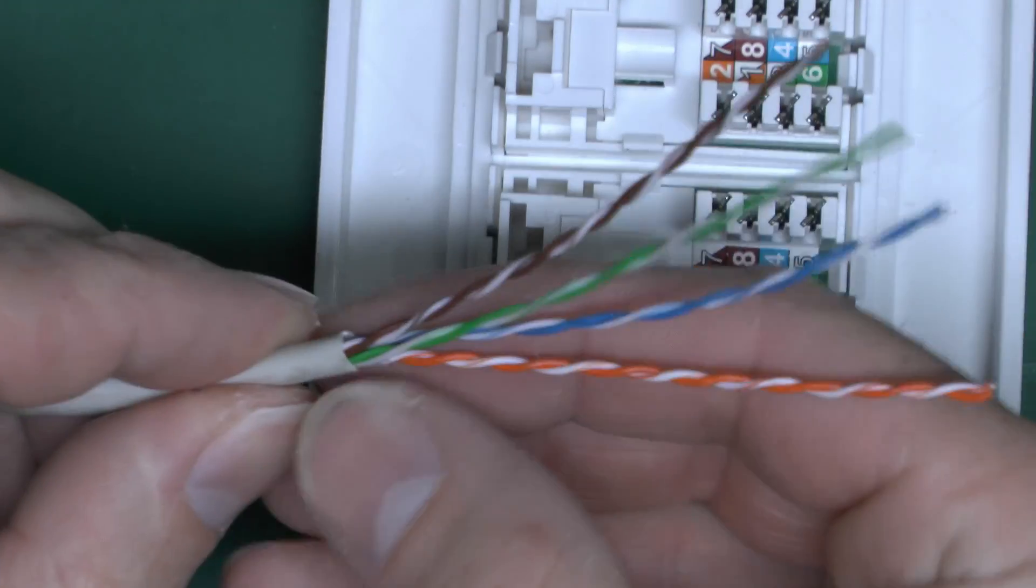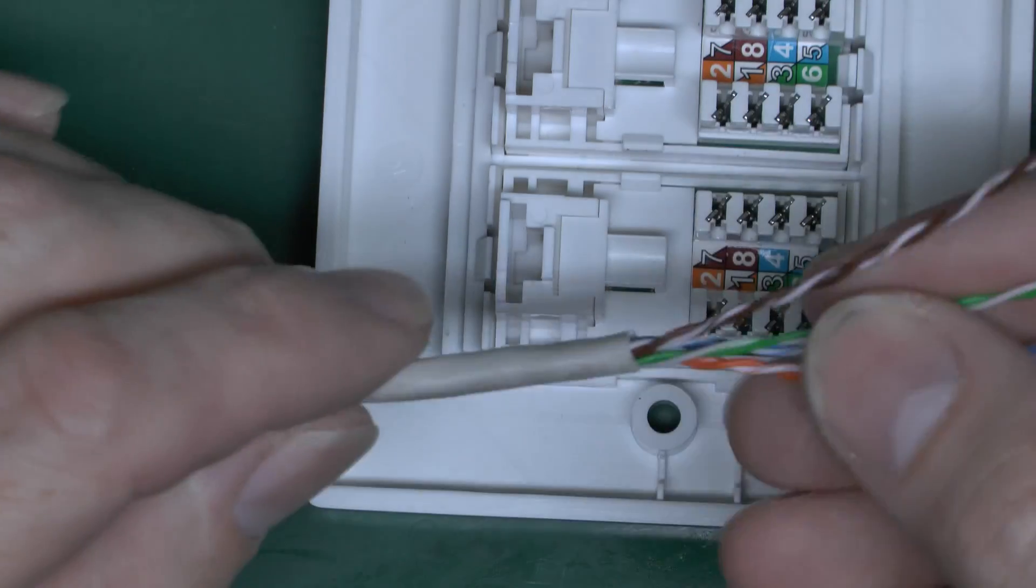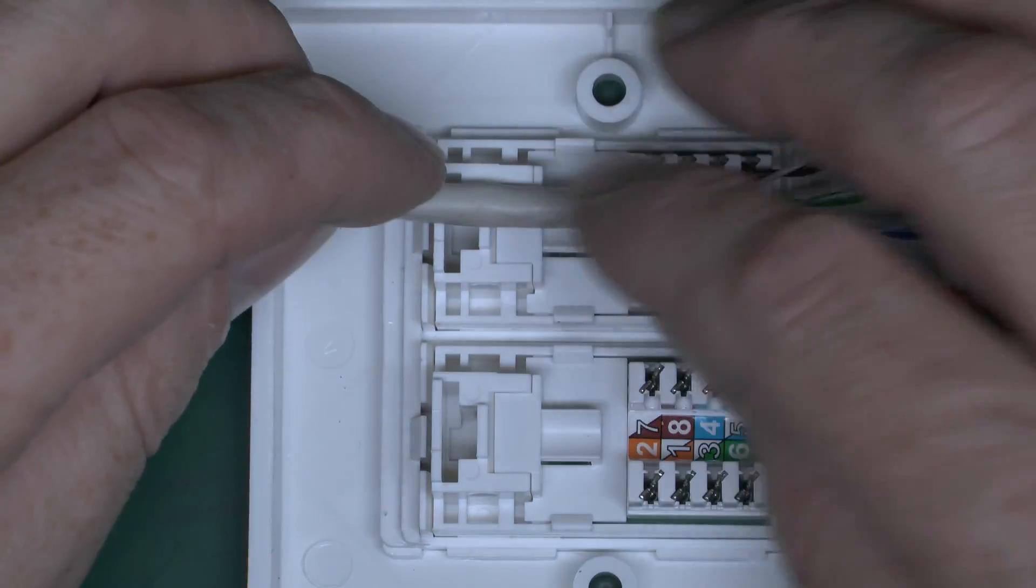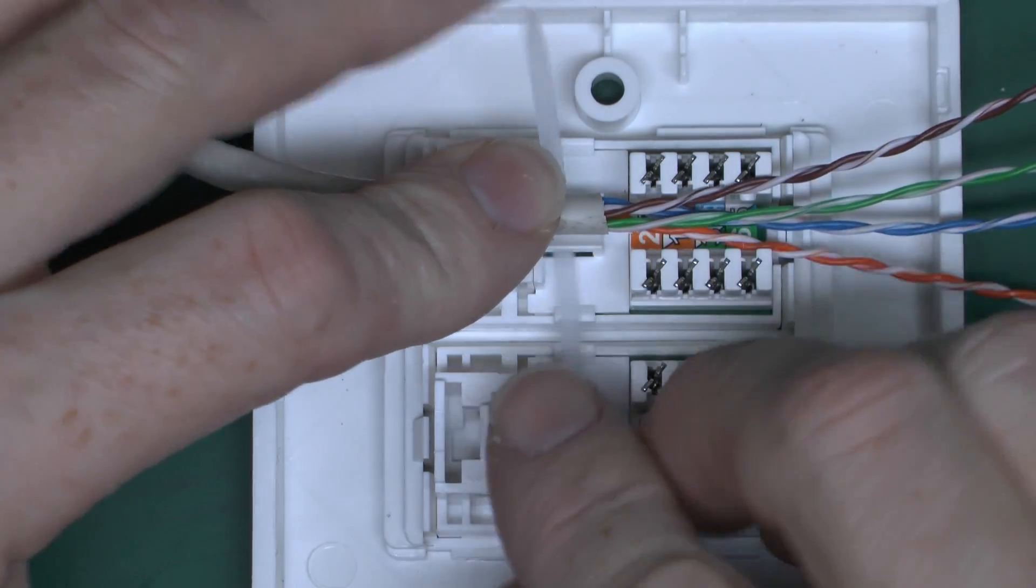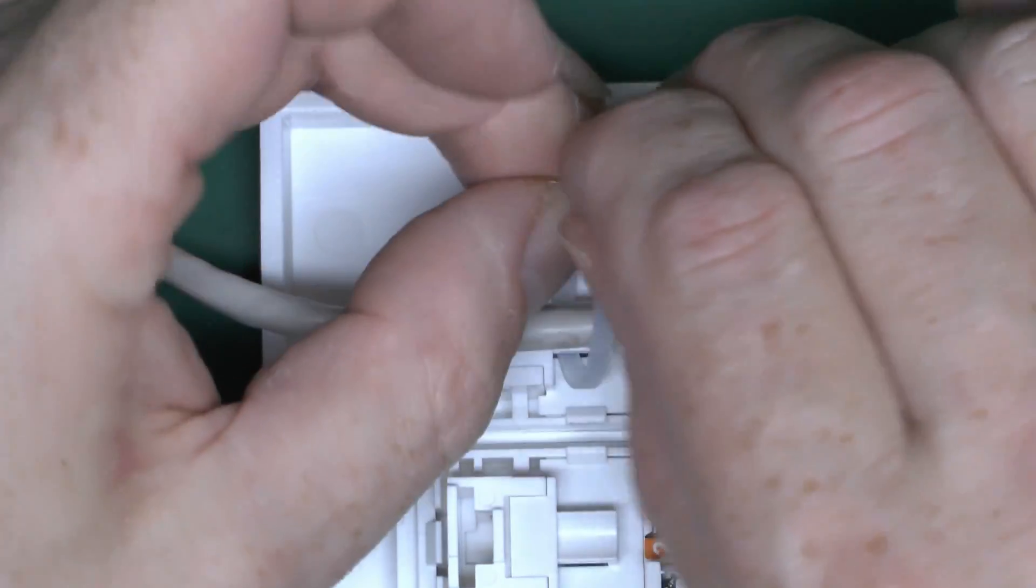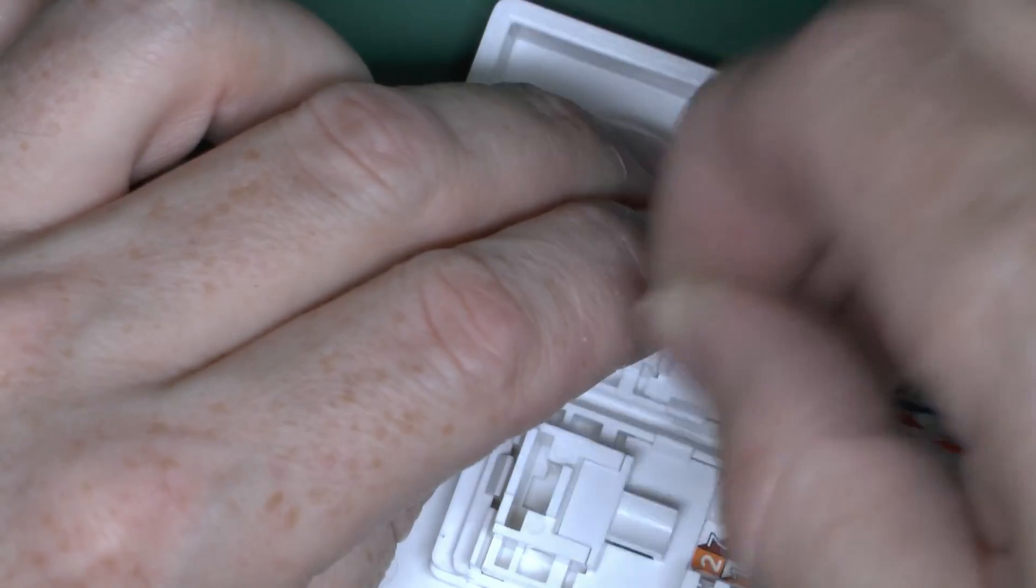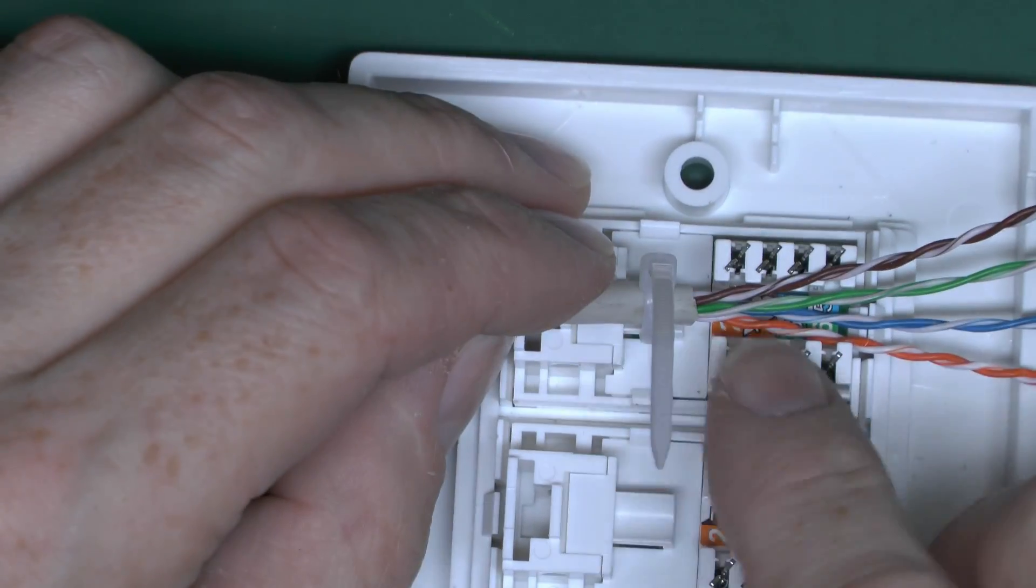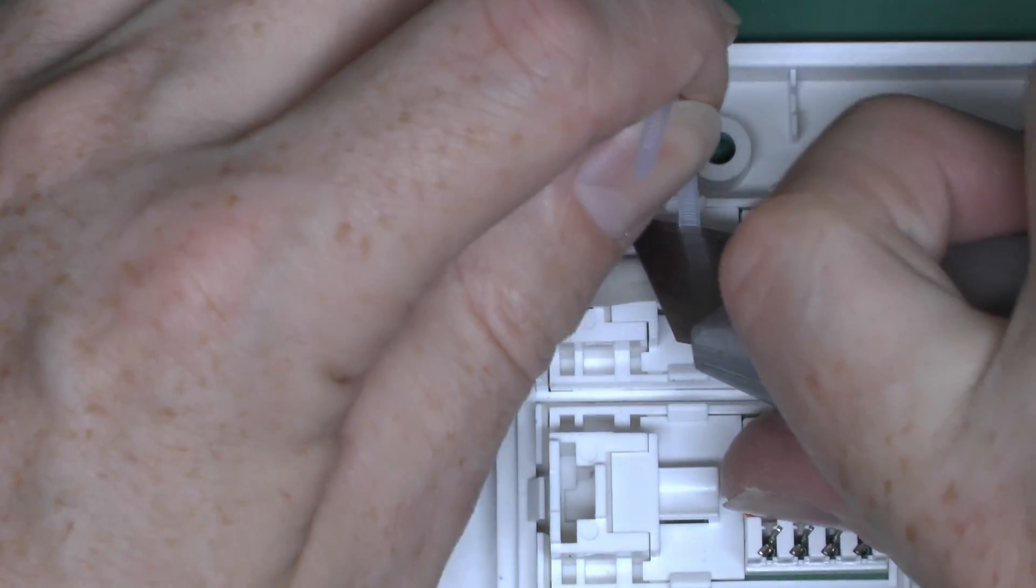In terms of fitting these, we've got the outer insulation removed to a moderate length so we can get them into the terminals. We're going to place that down in here, and what we should do is fix the cable using the cable tie. Just place that through the hole and thread it through. This will secure the cable in place so it doesn't move around. You want to go over the actual outer covering of the wire, not onto the color insulation part. Just secure that down and trim off the excess cable.